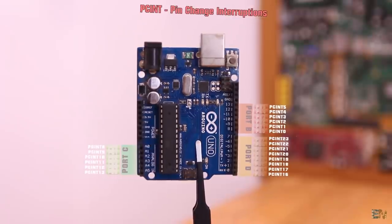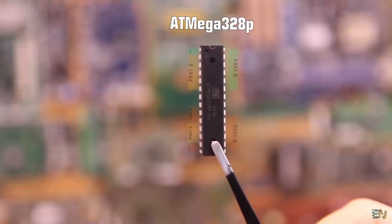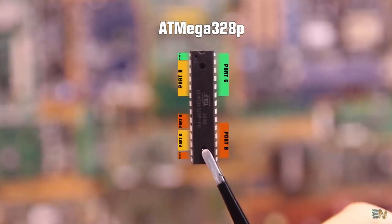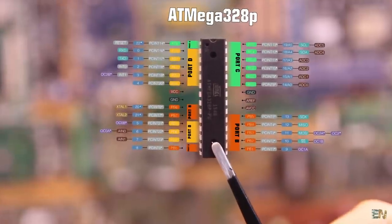So as you remember from the last video, the Arduino Uno is using the Atmega 328 microcontroller, and if you remember this was its pinout, and we have 3 ports, the port B, port C and port D.